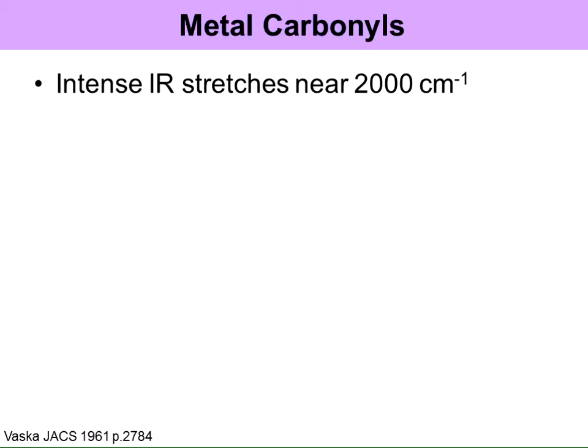Another application related to IR spectroscopy is metal carbonyls, which give a lot of information about molecules and are a really cool class of inorganic compounds. They have intense IR stretches near 2,000 wave numbers, which gives them a great spectroscopic handle to look at in the IR, because there's not a lot of things in that region and they are very strong, intense absorptions. So it's a great tool to look at what's going on in the molecule.